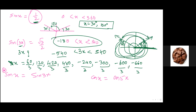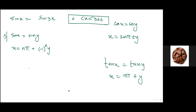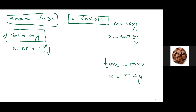When solving trig equations, don't just take 0 to 180 or 0 to negative 1 - that's a casual approach many students use and then mess up. Make sure to cover the full extended range. The general solution: when the equation is sin x equals sin y, the general solution is x equals nπ plus (minus 1) to the power n times y.